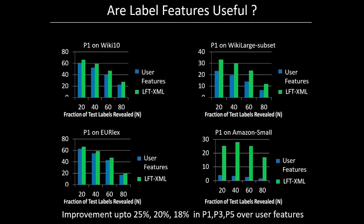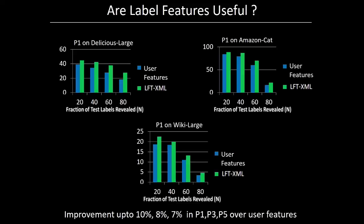First, let me discuss whether using label features actually makes a difference. Here we compare our extreme classifier with label features against FastXML, which uses only user features without label features. We observe that we are able to improve accuracy by up to 25 percent, 20 percent and 18 percent in P@1, P@3 and P@5 respectively. The same trend is followed on relatively larger datasets, where we achieve up to 10, 8, and 7 percent improvement in precision.